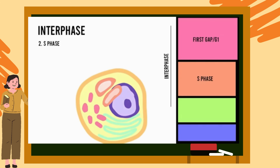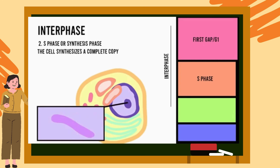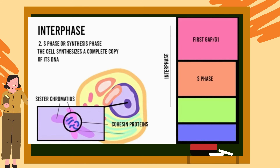The second stage is known as the S phase, or the synthesis phase. During the synthesis phase, the cell synthesizes a complete copy of its nuclear DNA, resulting in two identical pairs of DNA known as sister chromatids. These sister chromatids are held together by cohesin proteins and linked together at a region at the center of the two chromatids called the centromere.